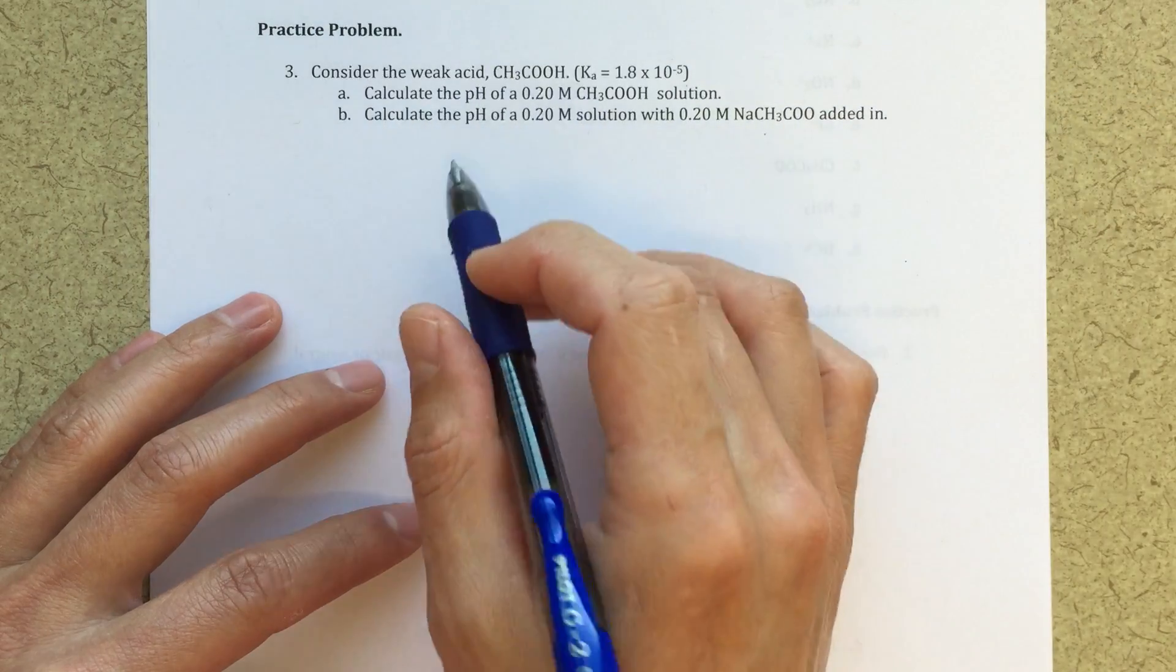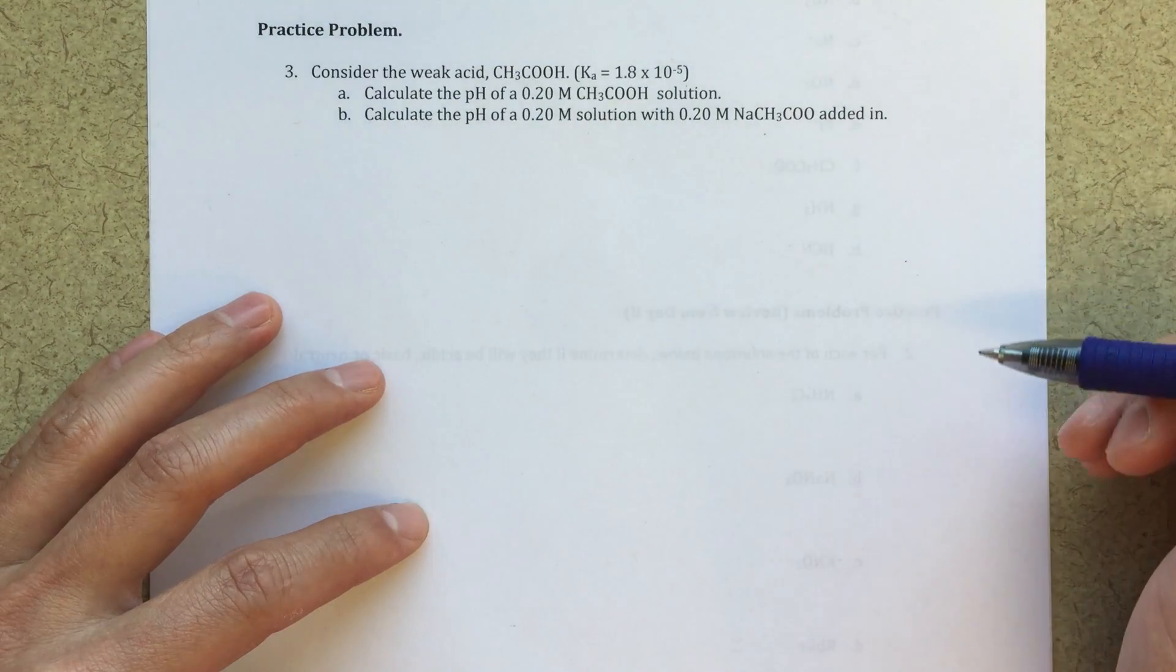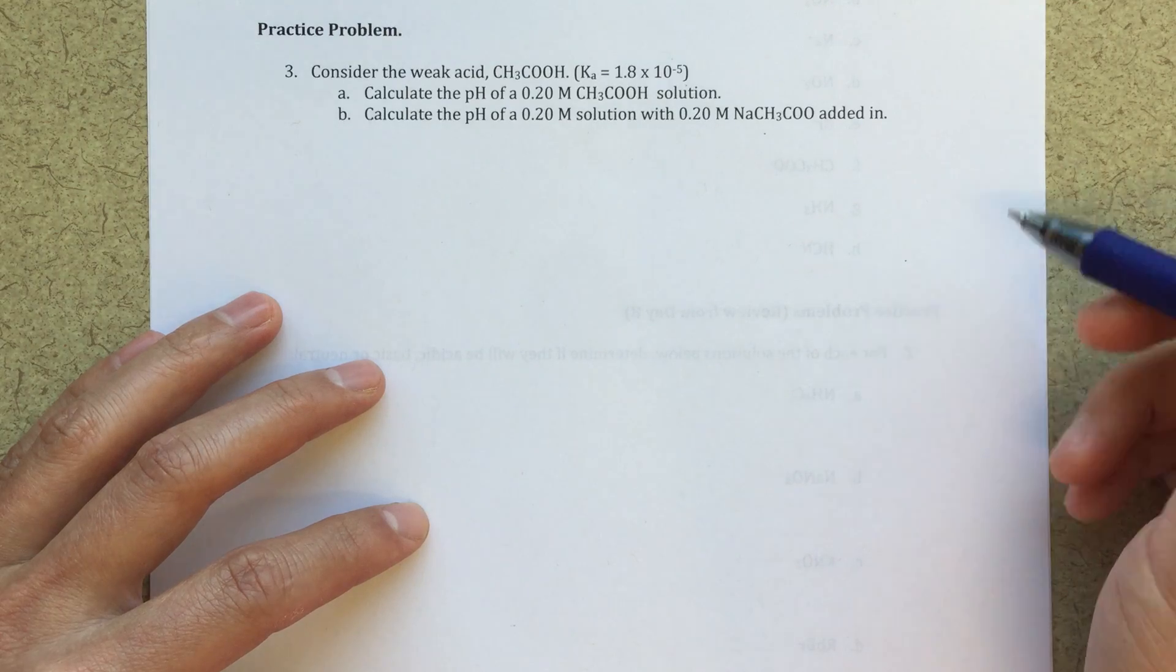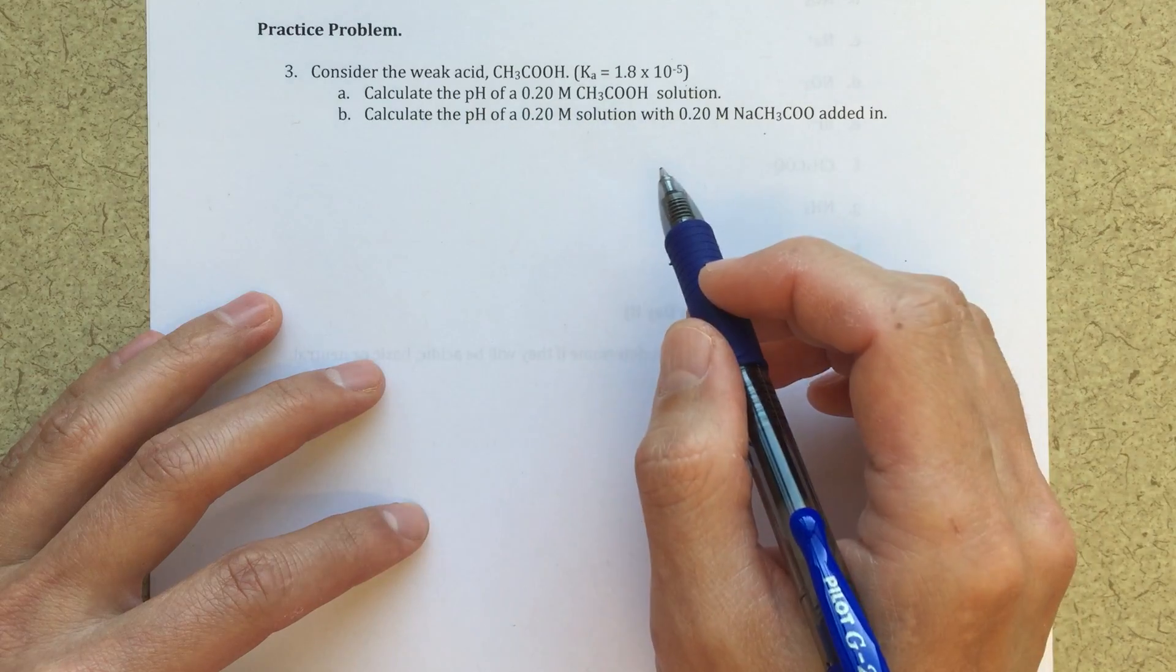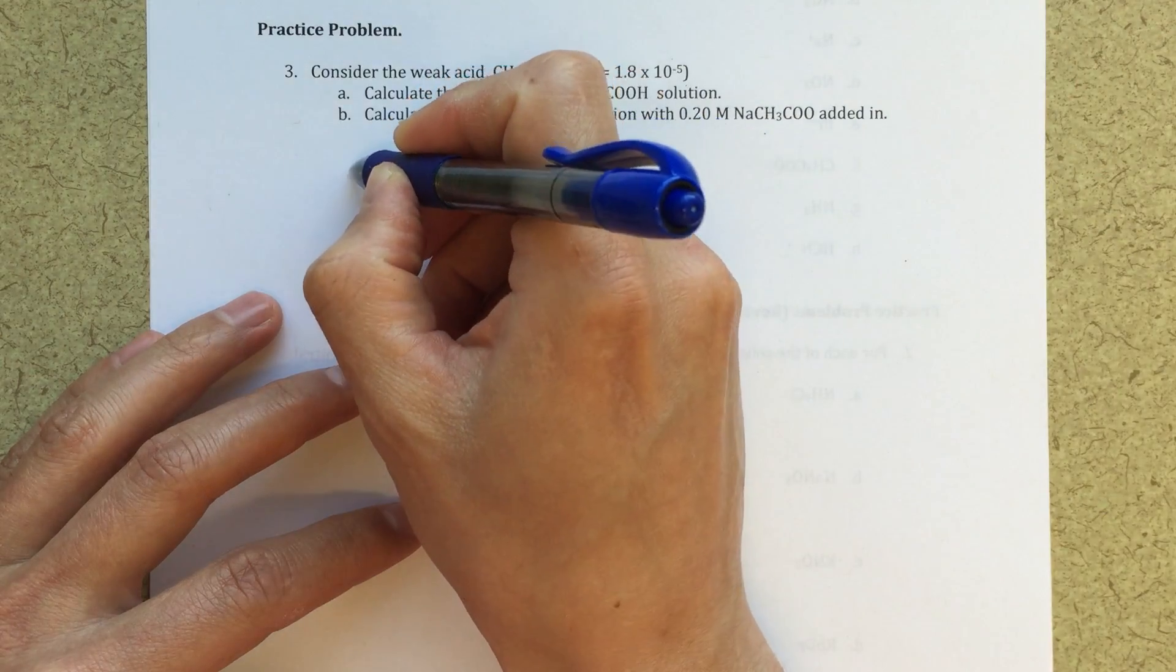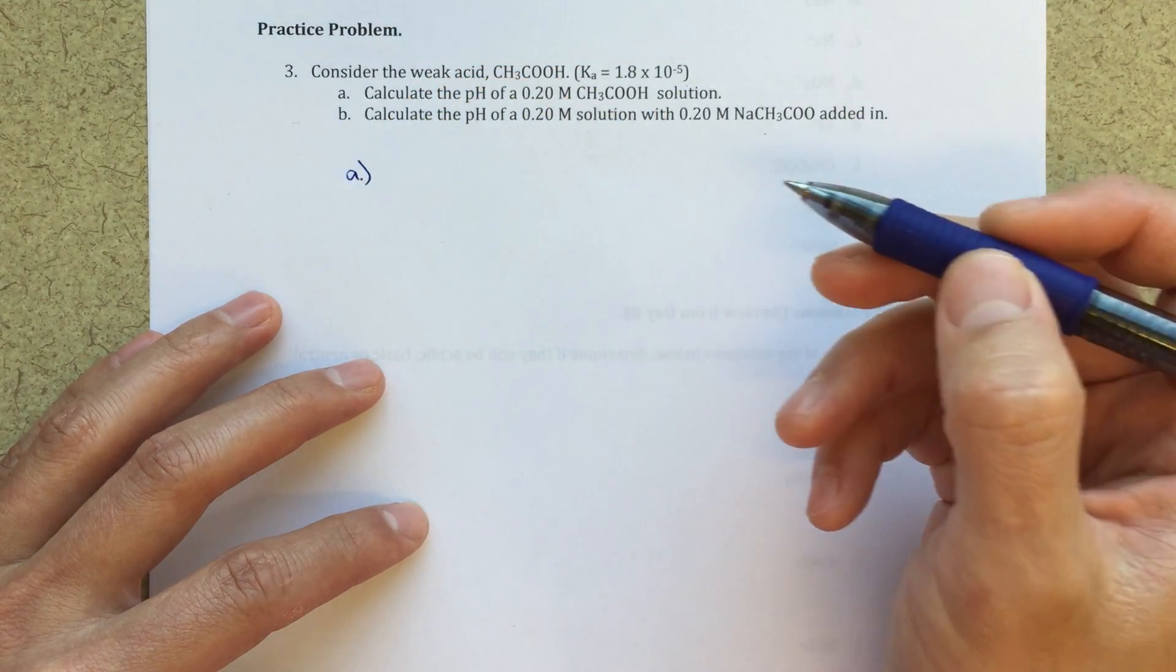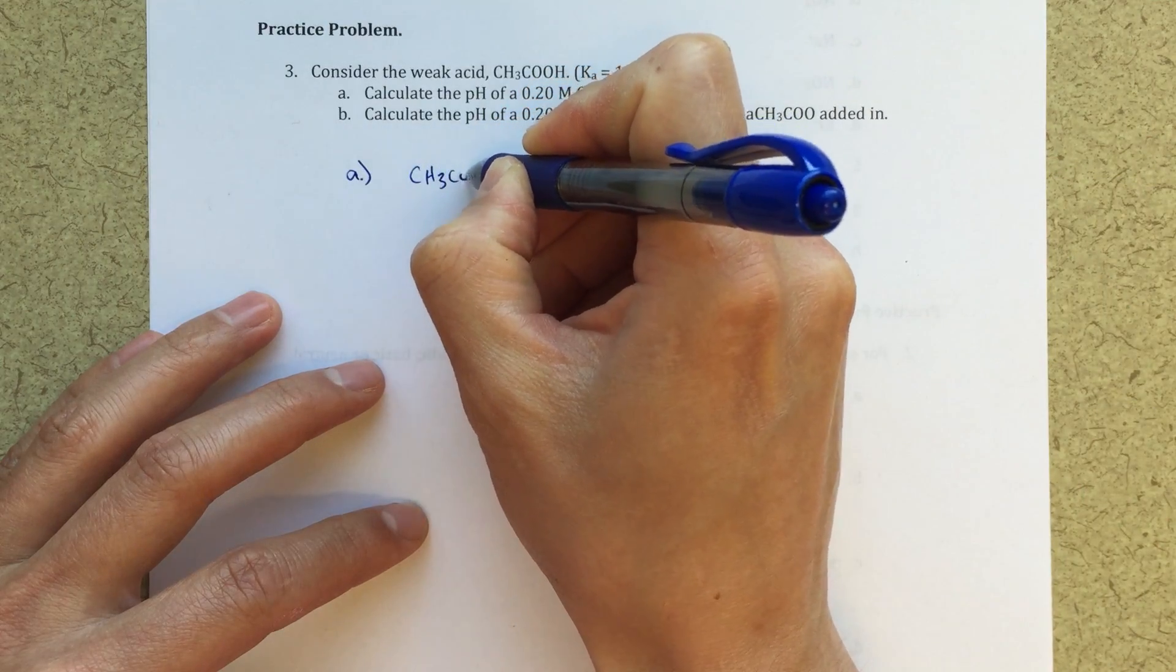The first thing says we've got a weak acid, we're giving the Ka for that weak acid, 1.8 times 10 to the minus 5th, and it asks us to calculate the pH of a 0.2 molar solution. So this is just a simple weak acid Ka ice table type problem.